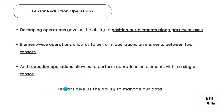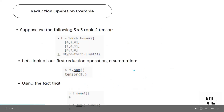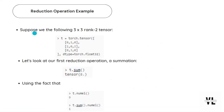Tensors give us the ability to manage our data. That's why we say that tensors are our basic data structure in PyTorch, because they enable us to use the different kinds of operations to manage our data. Let's see a reduction operation example. Suppose we have the following 3x3 rank-2 tensor. We're going to define a tensor called T and it's a 3x3 rank-2 tensor.